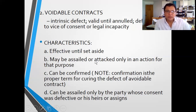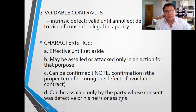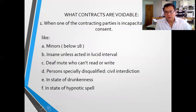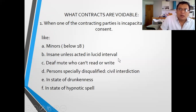A voidable contract may be assailed or attacked only in an action for the purpose. It can be confirmed or ratified — confirmation is the proper term for curing the defect of a voidable contract, not ratification. It can be assailed only by a party whose consent was defective, or his heirs or assigns. Contracts entered into by minors, the insane, deaf-mutes who cannot read or write, or persons specifically disqualified — like those under civil interdiction, drunk persons, or those in a state of hypnotic spell — are voidable.